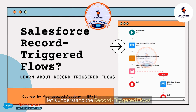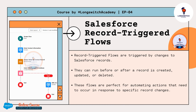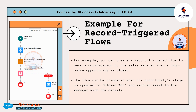Record Triggered Flows are triggered by changes to Salesforce records. They can run before or after a record is created, updated, or deleted. These flows are perfect for automating actions that need to occur in response to specific record changes. For example, you can create a Record Triggered Flow to send a notification to the sales manager when a high-value opportunity is closed. The flow can be triggered when the opportunity stage is updated to 'Closed Won' and send an email to the manager with the details.